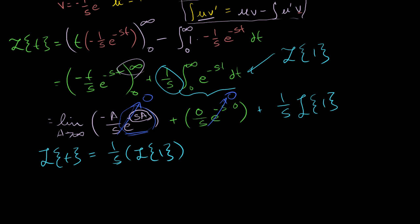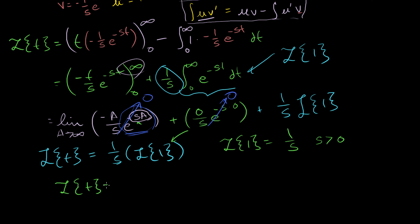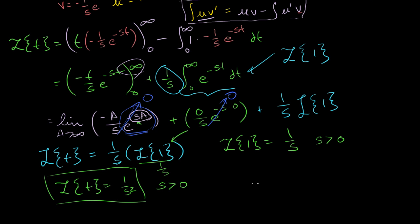We know the Laplace transform of 1 is 1 over s, assuming s is greater than 0 — and we needed that same assumption here to ensure the exponential term goes to 0. So the Laplace transform of t equals 1 over s times 1 over s, which equals 1 over s squared, for s greater than 0. That's one more entry in our table, and in the next video we'll build up to the Laplace transform of t to any arbitrary exponent.